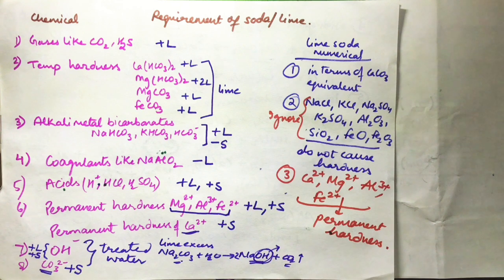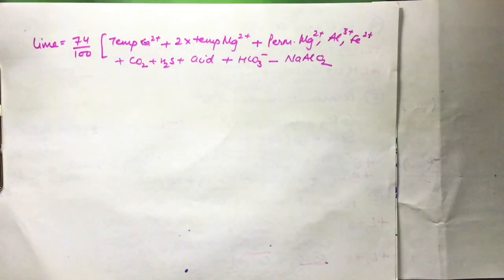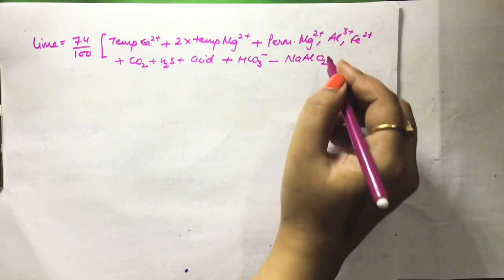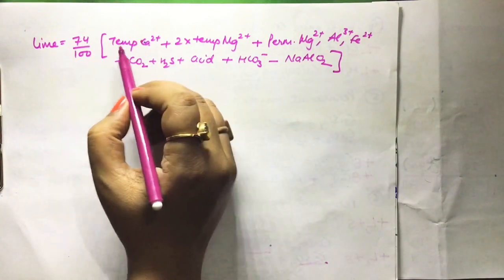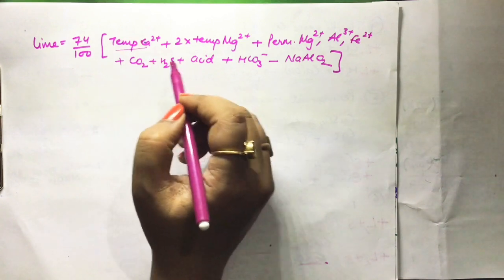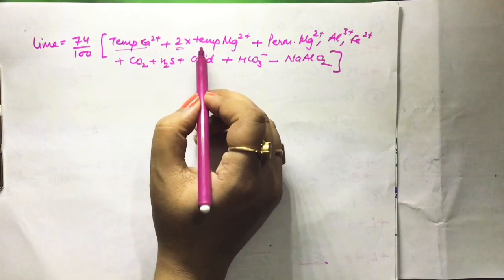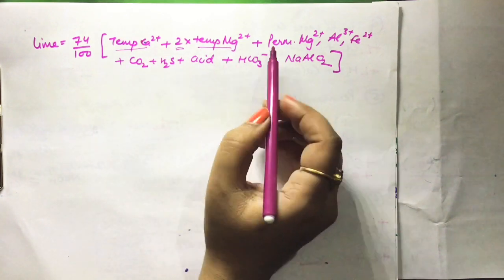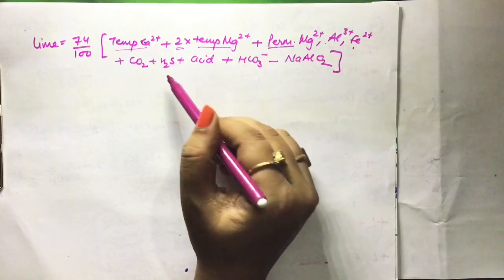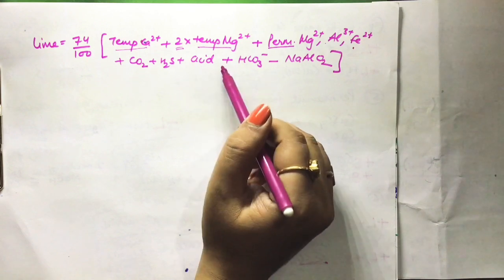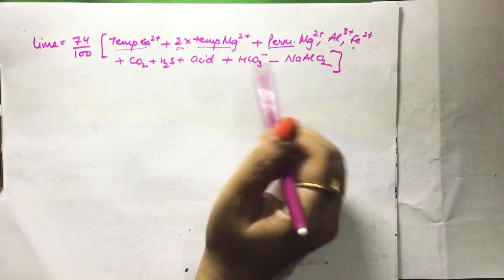After this, we have the lime formula. Lime = (74/100) × [temporary hardness of Ca²⁺ + twice the temporary hardness of Mg²⁺ + permanent hardness of Mg, Al, Fe + CO2 + H2O + acid + bicarbonate − AlO2⁻].